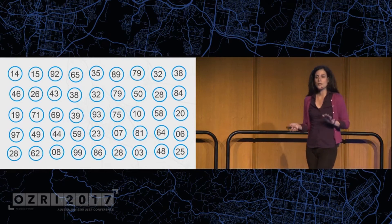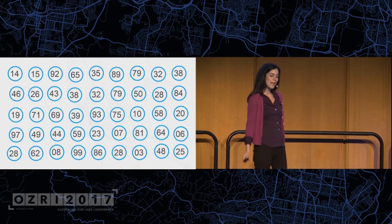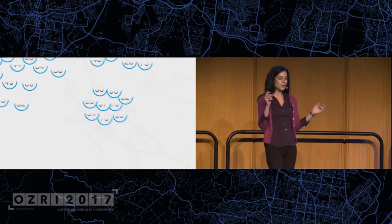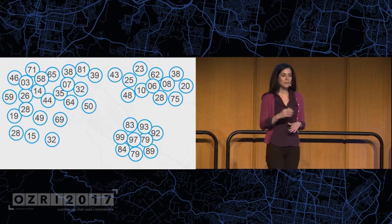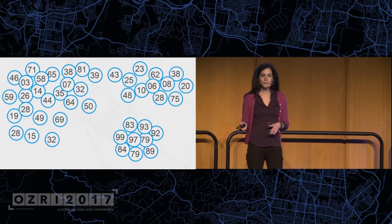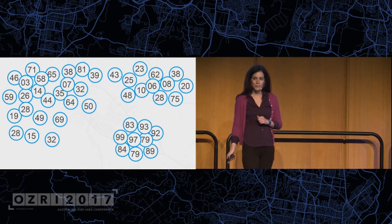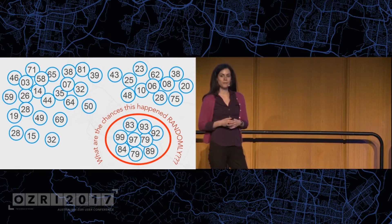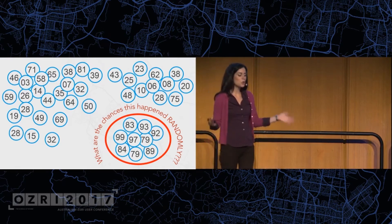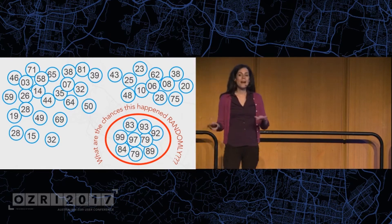To illustrate this point, let's take a look at 45 of my favorite random numbers. Let's say we were to pick these up, shake them up, and drop them. You don't need to know anything about spatial statistics or probability theory to just intuitively sense — you just kind of feel it in your gut — that it would be really unlikely that all the high numbers just happened to fall together right here. We just intuitively know that's not random. But it's not always quite that obvious.